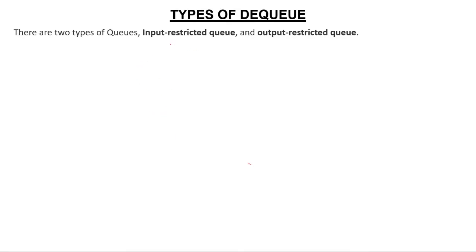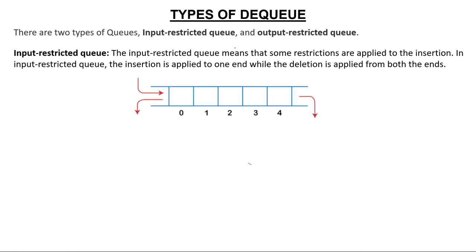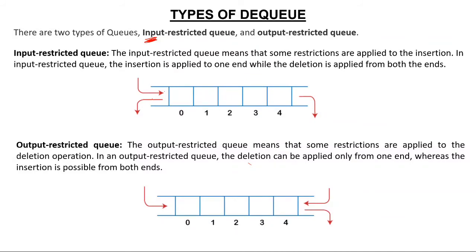There are two types of DQs: input restricted and output restricted. In an input restricted DQ, even though a double ended queue normally allows insertion and deletion from both sides, you have a restriction on insertion — you can insert only from one side. So deletion can happen from both sides but insertion takes place only from one side. In an output restricted DQ, insertion takes place from both sides, but deletion takes place only from one side. So we are putting a restriction on output.